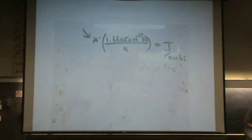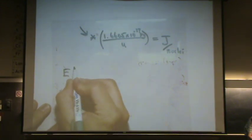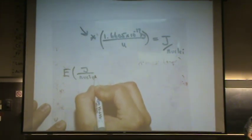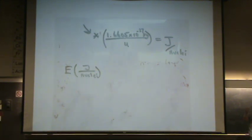So let's try this. Right now I have an energy, and that's in units of joules per nuclei. Again, from that E equals mc squared, I get this unit. I'm going to convert.